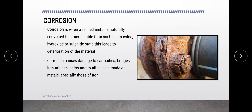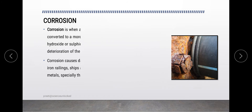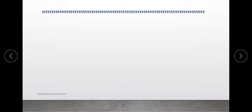Corrosion means we need more and more resources to replace things made of that particular metal — for example, bridges and ships made of iron and steel. Once they get corroded or oxidized in nature, we need to replace all such things. Sometimes this damaging process can actually be useful, which we will take up in the coming section, but most of the time it is not preferred.